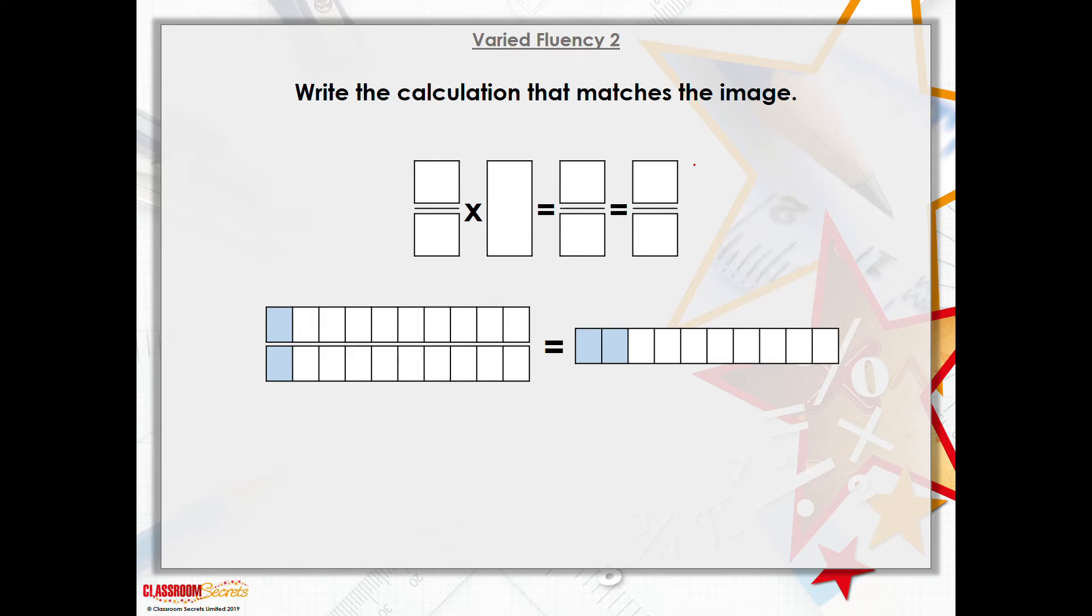It says here, write the calculation that matches the image. What we've got is our fraction multiplied by something equals another fraction and equals another fraction, which is our simplified fraction. Now underneath we have two sets of images. We have two bars, one on top of the other, and then we have the same as a bar running across the side. Now first of all, I'm going to look at, I'll circle it, I'm going to look at this because this will give me the fraction that I need to put in to this area just here.